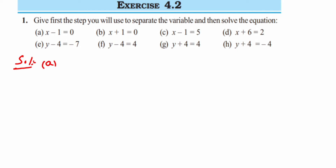So, part (a): x minus 1 is equal to 0. We have to separate this minus 1 from the left-hand side. To do that, we add 1 on both sides of the equation.